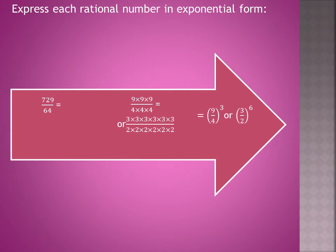We have to express a rational number in exponential form or power form. 729 upon 64 is in fraction form. It is called a rational number. First, we make the factors of 729 and secondly for 64. It is better to take the smallest factor.